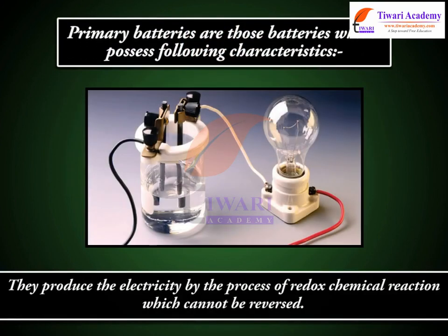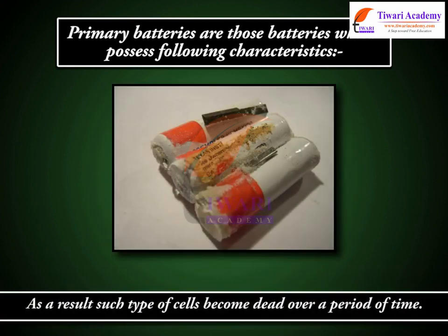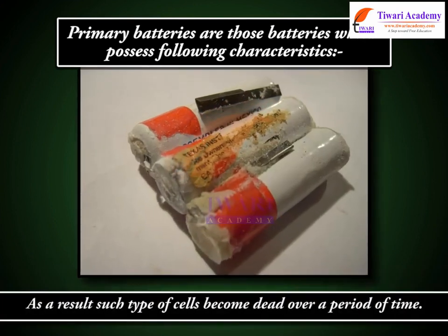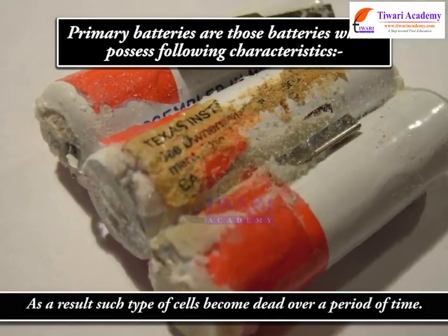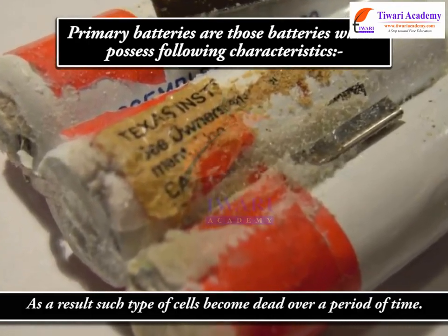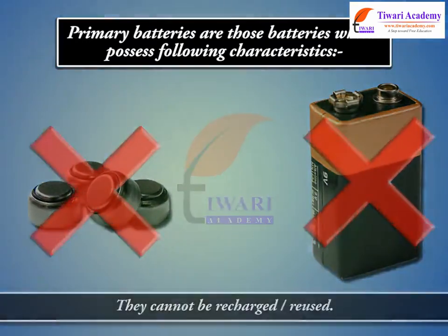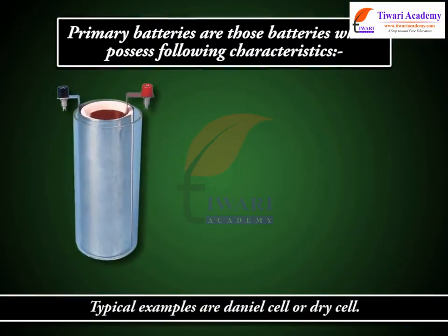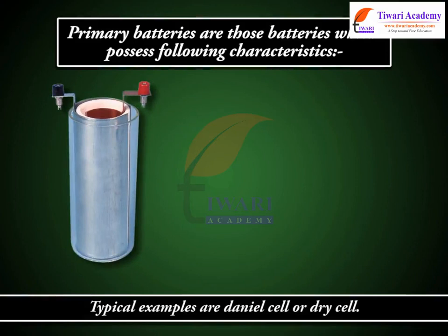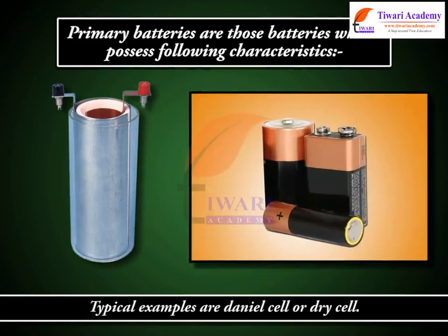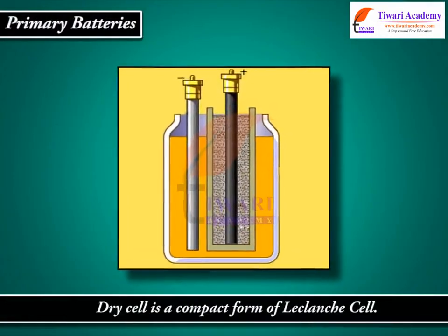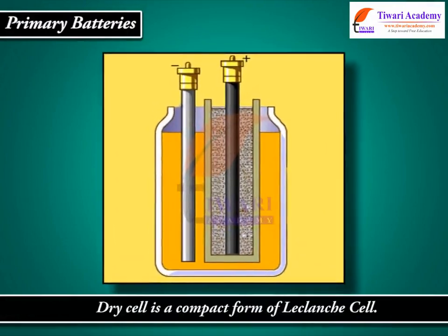They produce electricity by the process of a redox chemical reaction which cannot be reversed. As a result, such type of cells become dead over a period of time. They cannot be recharged or reused. Typical examples are the Daniel cell or dry cell.